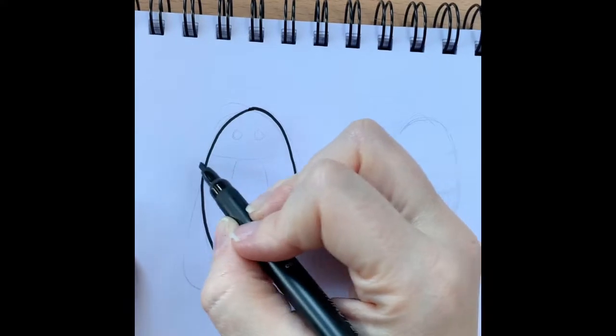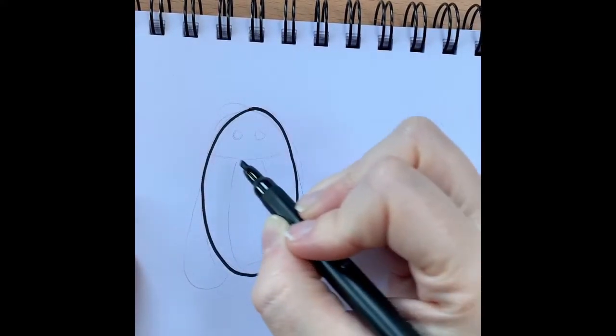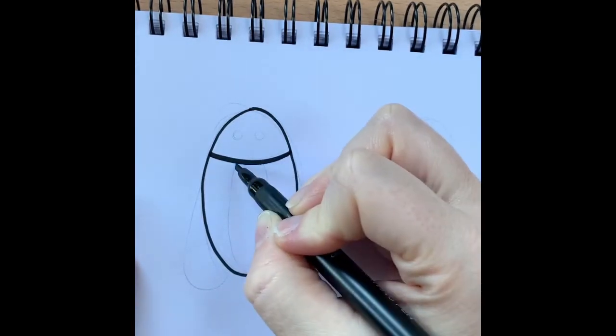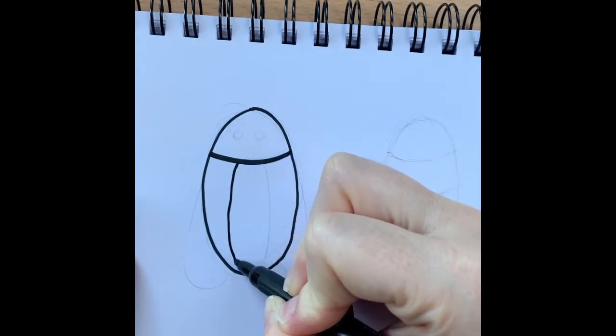And we're going to draw different sections on the bug. So we're going to do a head area here. We're going to do a line down, slightly curved line.